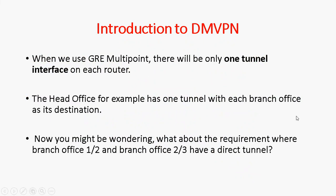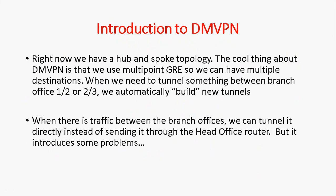When using multi-point GRE there will be only one tunnel interface on each router, with each branch office as a destination. You might wonder about the requirement where branch office 1 and 2, and 2 and 3, need a direct tunnel. The cool thing about Dynamic Multi-Point VPN is that we use multi-point GRE with multiple destinations. When there is traffic between branch offices, we can tunnel it directly instead of sending it through the head office router.